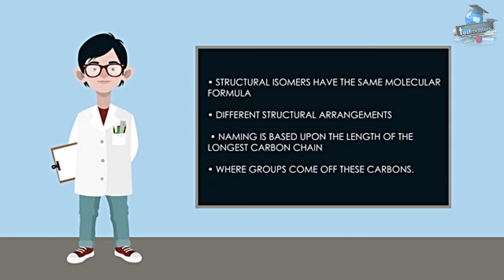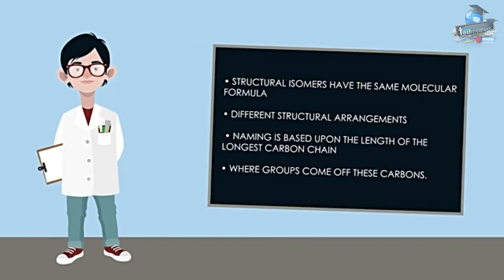So from this video you should know that structural isomers have the same molecular formula but different structural arrangements, and that naming is based on the length of the longest carbon chain and on where the groups come off this chain.